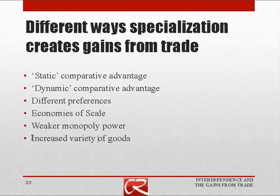Finally, not easily measured but clearly beneficial: international trade gives us an increased variety of goods. We can experience music or food from different countries. Japanese cars are different from American cars — for some purposes American cars are better, for others Japanese cars are better. We're better off for being able to consume an increased variety of goods.